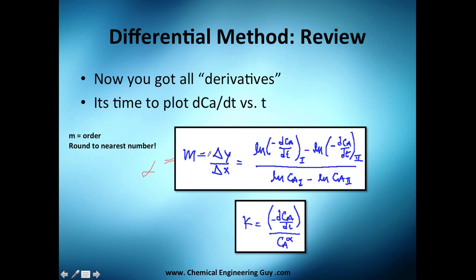And you will get your m, which is the slope, which is essentially just the difference of y - which is the natural logarithm of the derivative of the concentration with respect to time - and the difference of concentration or natural logarithm of concentration.